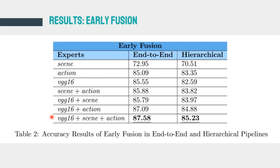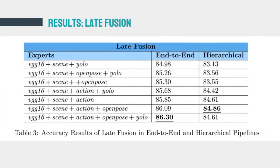These are the late fusion results. The best-performing late fusion model uses the combination of VGG16, scene, action, OpenPose, and YOLO experts with the end-to-end pipeline, scoring an accuracy of 86.3%. The trend of increasing the number of experts being positively correlated with accuracy still stands.